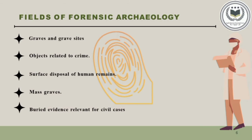The next field is mass graves. These are usually commissioned by organizations such as the UN, where the investigation is focused on both recovery of human remains for identification and gathering incriminating evidence of war crimes. The next field is buried evidence relevant for civil cases. Sometimes forensic archaeologists don't have to excavate human remains, but look for buried evidence related to crime such as murder.